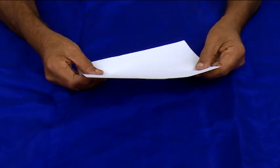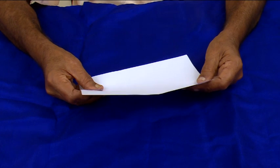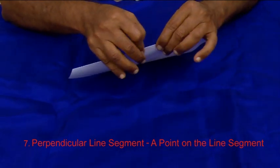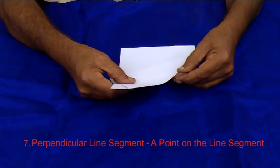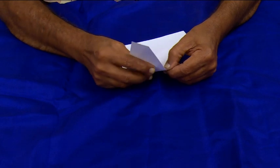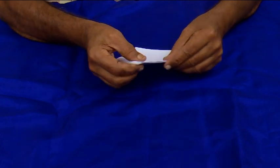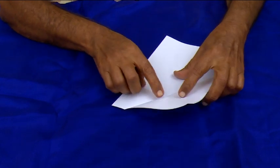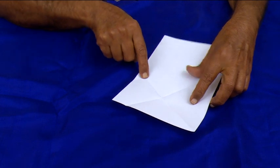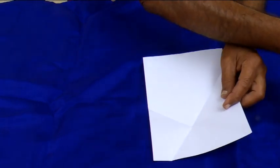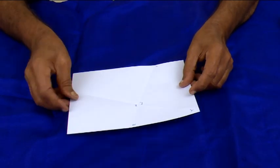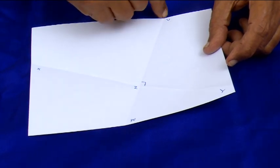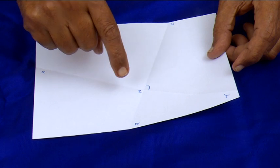Now how to draw a perpendicular line segment to a given line segment. Let us fold like this. So this is the given line segment. We will draw a perpendicular line to this. Let us fold like this. Now unfold. Here you can see the perpendicular — this line segment is perpendicular to the given line segment. The given line segment is XY and the perpendicular is VW at point Z, and angle VZY is equal to 90 degrees.